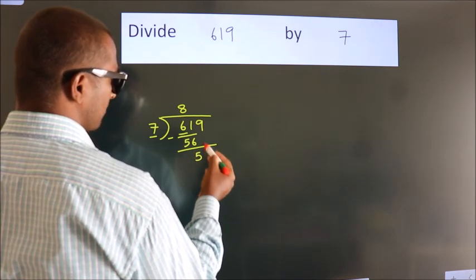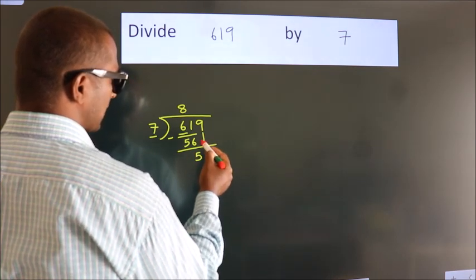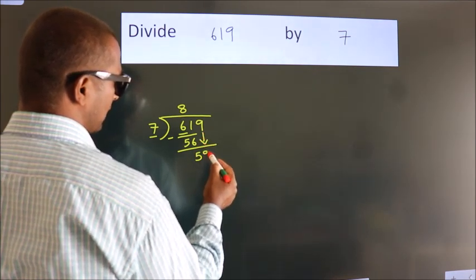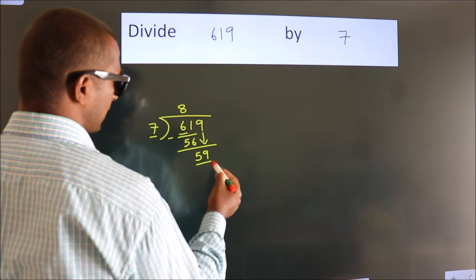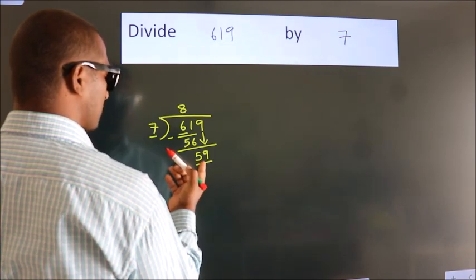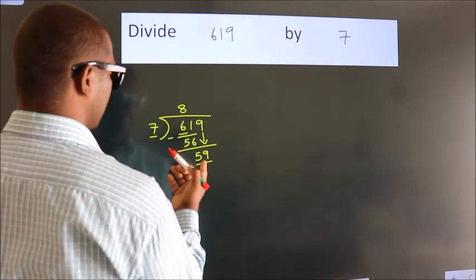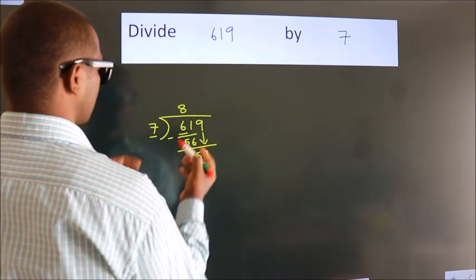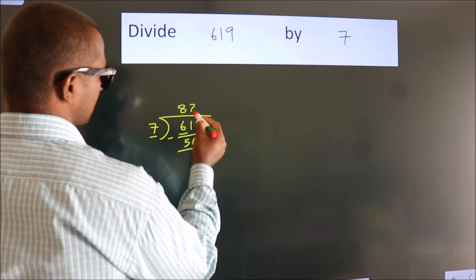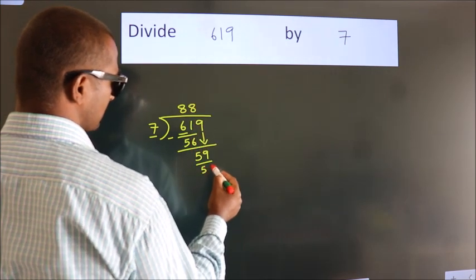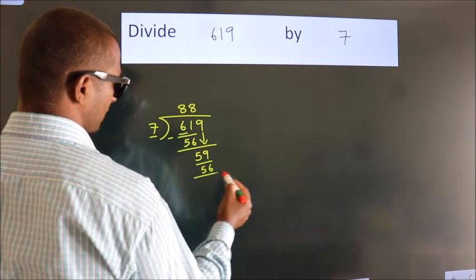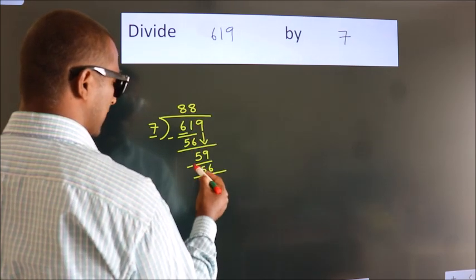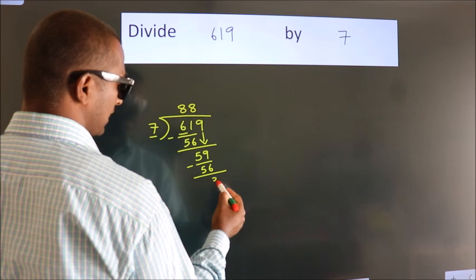After this, bring down the beside number. So 9 comes down, giving us 59. A number close to 59 in the 7 table is 7 × 8 = 56. Now we subtract and we get 3.